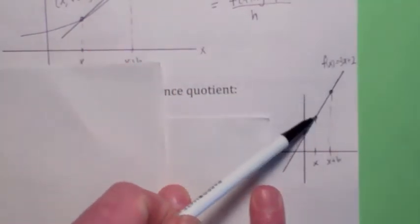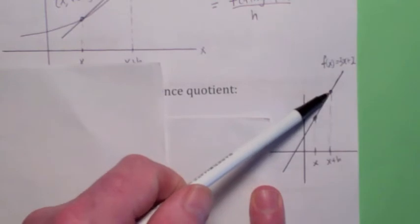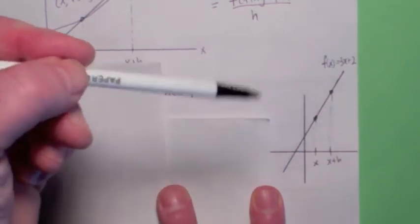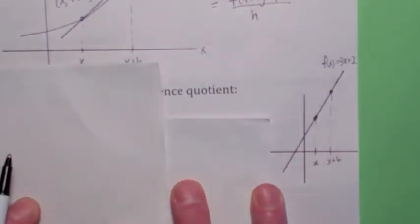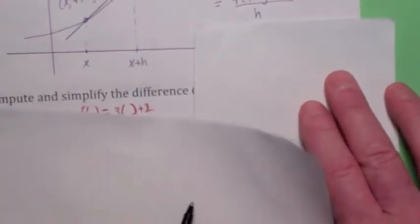Because if you go over here and look at the graph of y equals 3x plus 2, and here is your point (x, f(x)), here is your point (x+h, f(x+h)), what's the slope of this line that goes through these two points? Isn't it exactly the same as the slope of the function, the slope of the linear function? It should be 3, shouldn't it? Let's see if that's what we get.